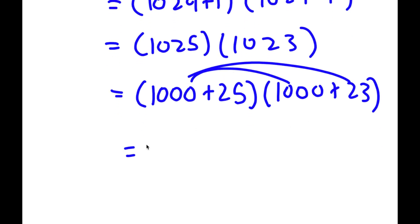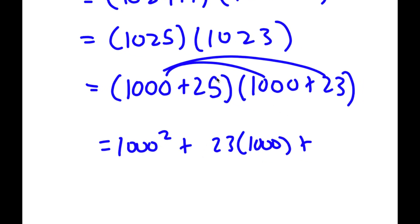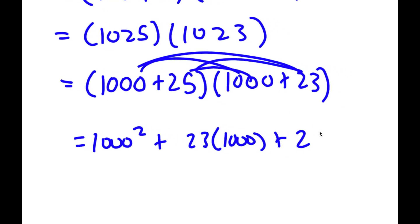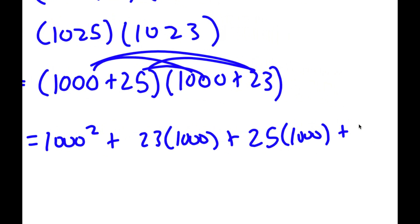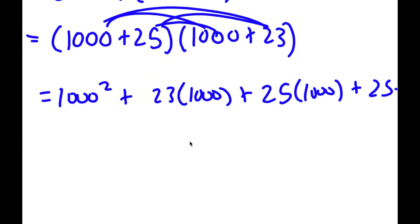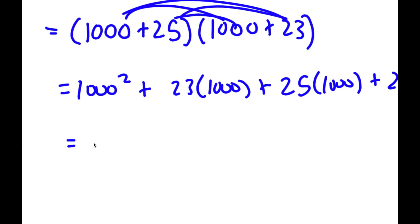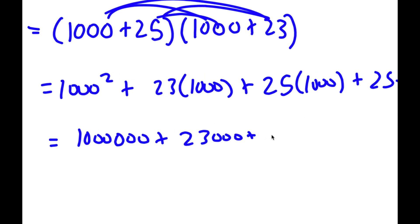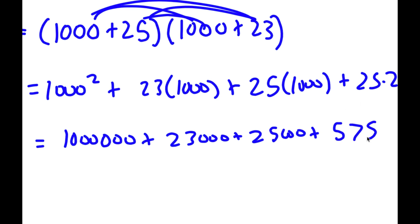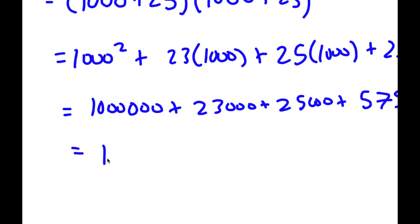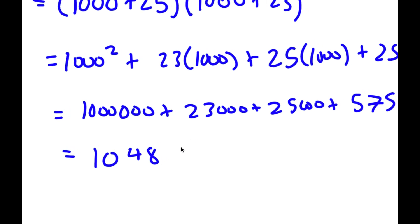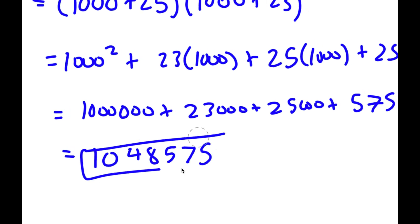1,000 times 1,000 is 1,000 squared, plus 1,000 times 23. Then distributing 25: 25 times 1,000 plus 25 times 23. Now we simplify: 1,000 squared is 1,000,000; 23 times 1,000 is 23,000; 25 times 1,000 is 25,000; and 25 times 23 is 575. All we have to do is add all of these, which equals 1,048,575. So this is my answer.